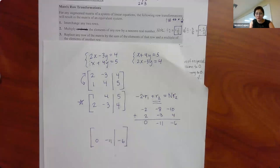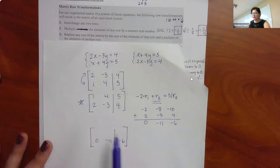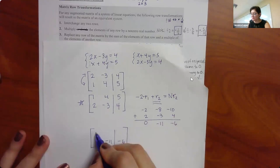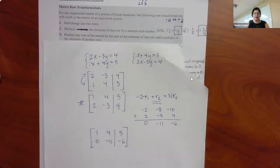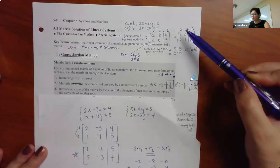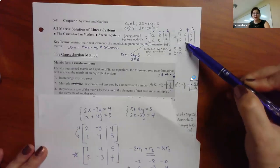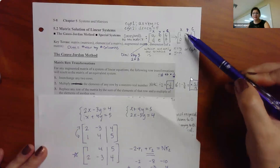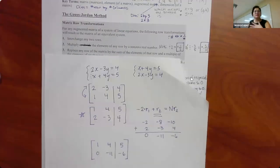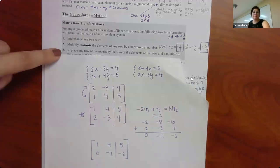The top row was never replaced — we used it, we multiplied it by something, but it's not the one getting replaced, so it just gets rewritten exactly the same. Only row two changes. Notice we're now halfway to the goal of having one, zero and zero, one. I just need to work on the other side. We'll have plenty more examples, but I just wanted to show you what this step looks like.